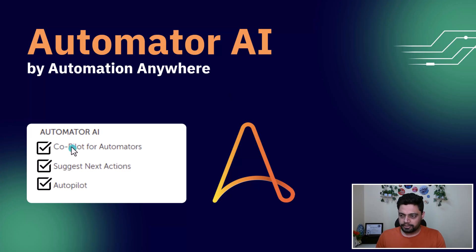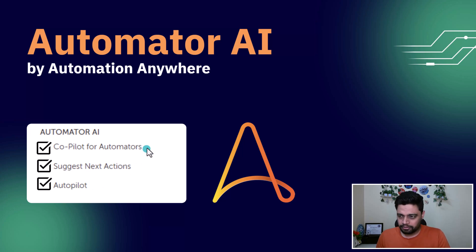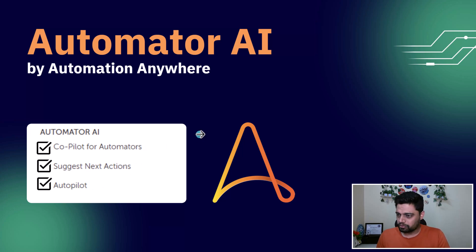As part of Automator AI, these are the features that you get: Copilot for Automators, Suggest Next Actions, and Autopilot. And there is one more — Generative Recorder — which we will also see.